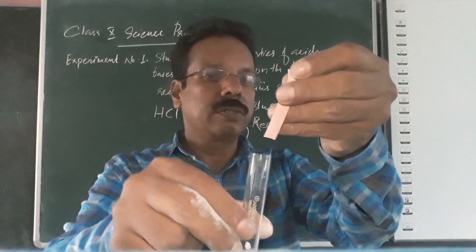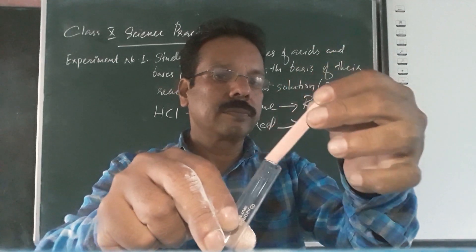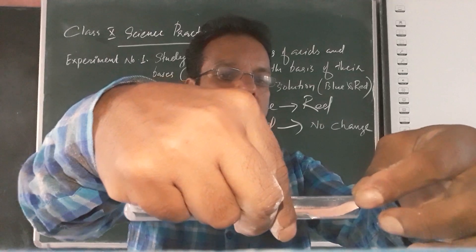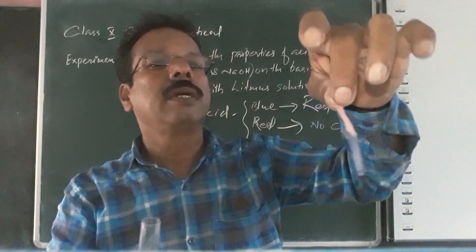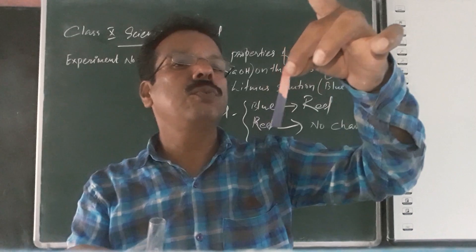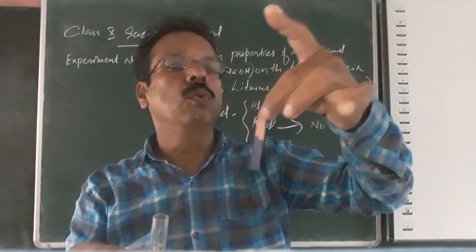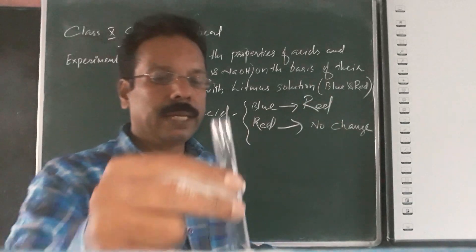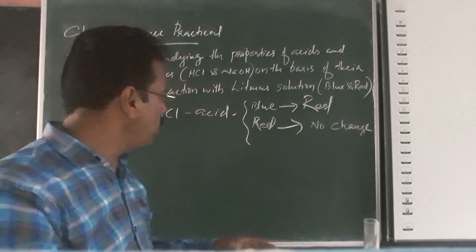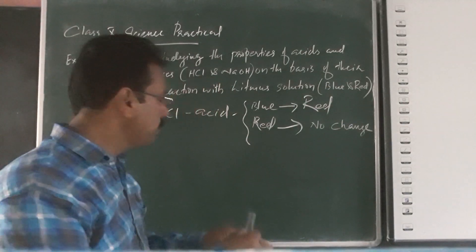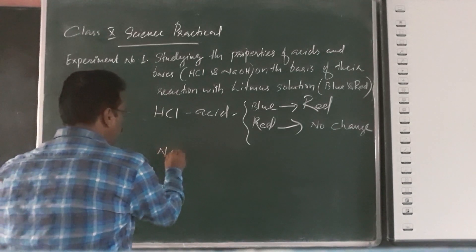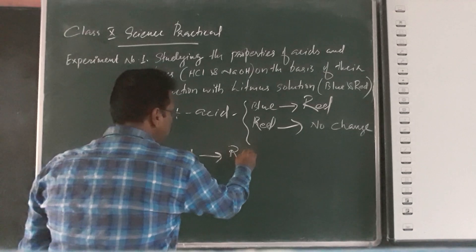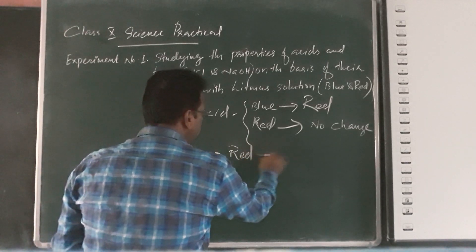We have to check it with the red litmus. Any color change? The color changes to blue. So in a basic solution — NaOH, sodium hydroxide — red litmus changes to blue.